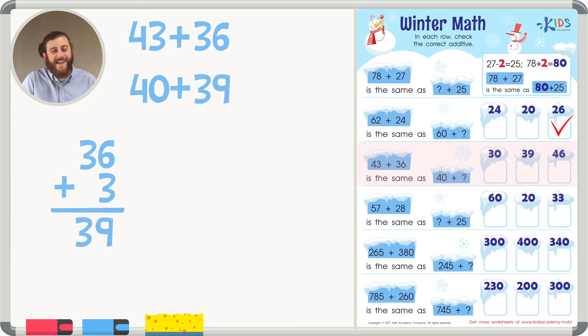40 plus 39 is a way easier problem to solve than 43 plus 36. Adding any number with a 0 or a 5 is going to be easier than adding an odd number, or really any other number between 0 and 10. So in this answer, the correct additive is 39.